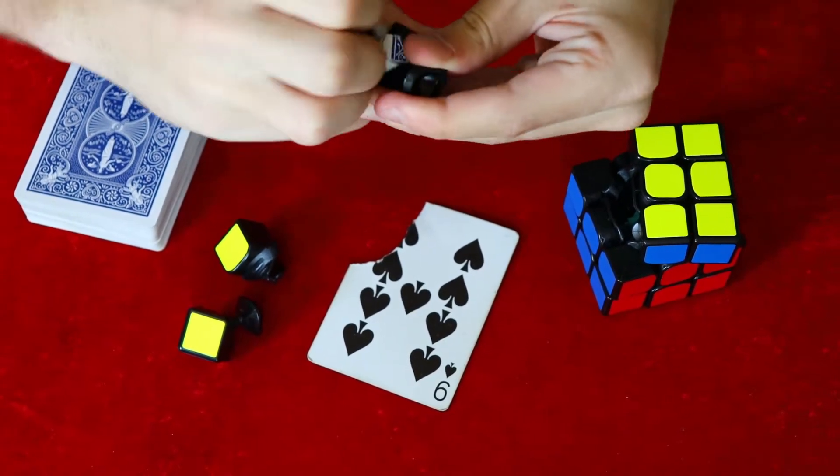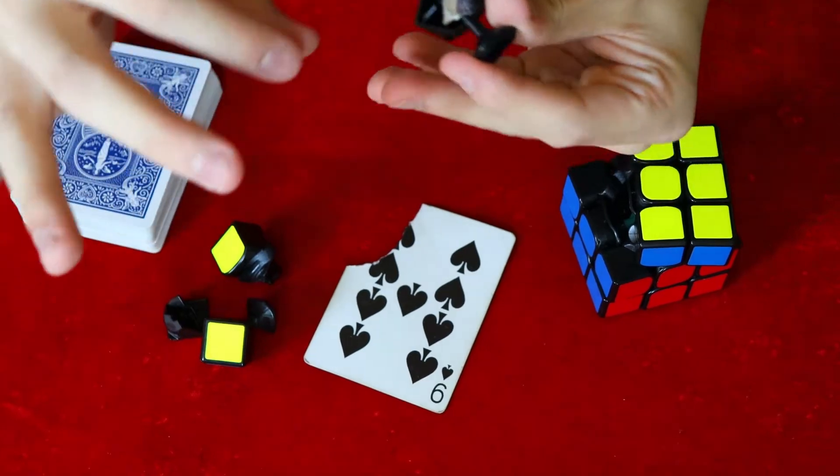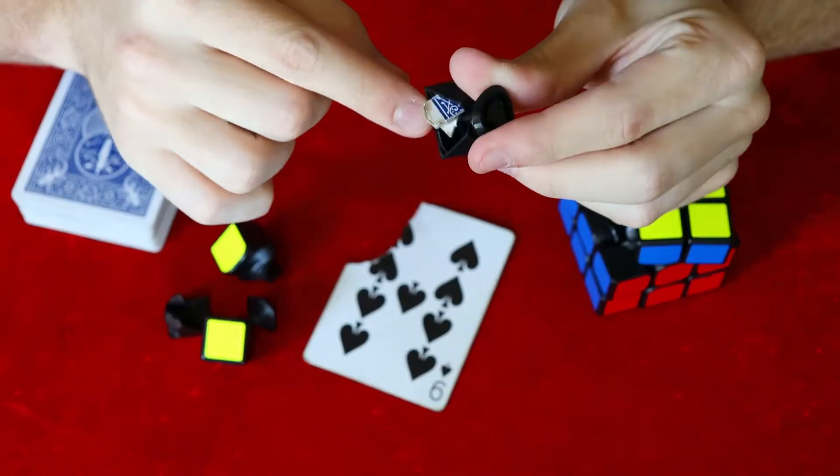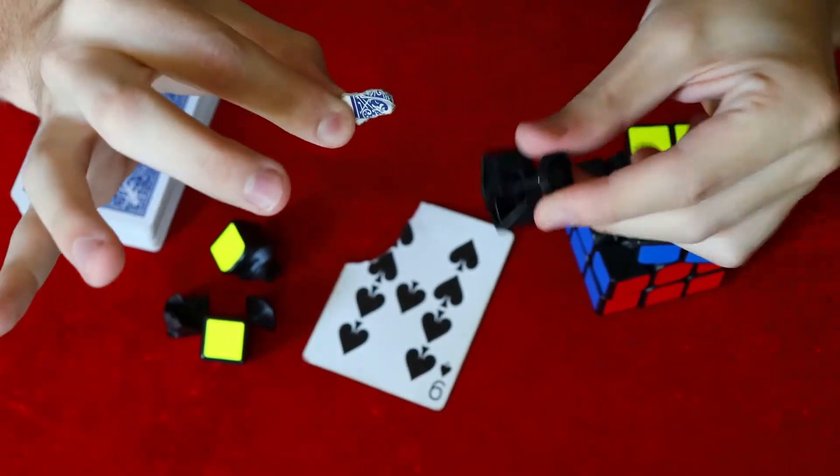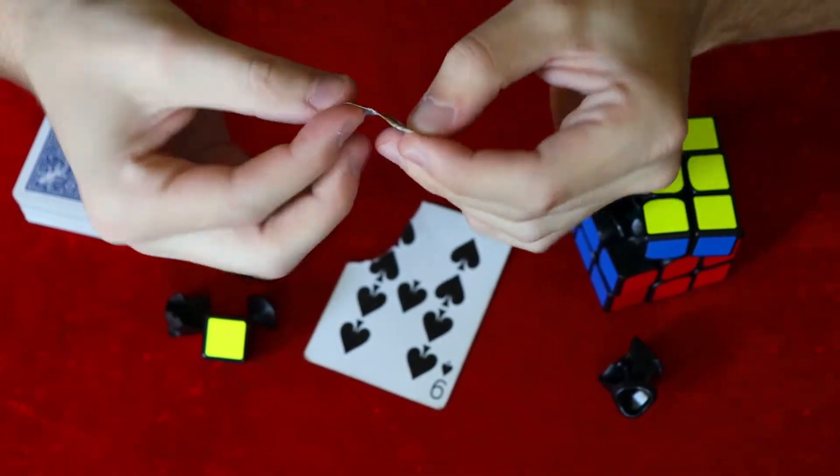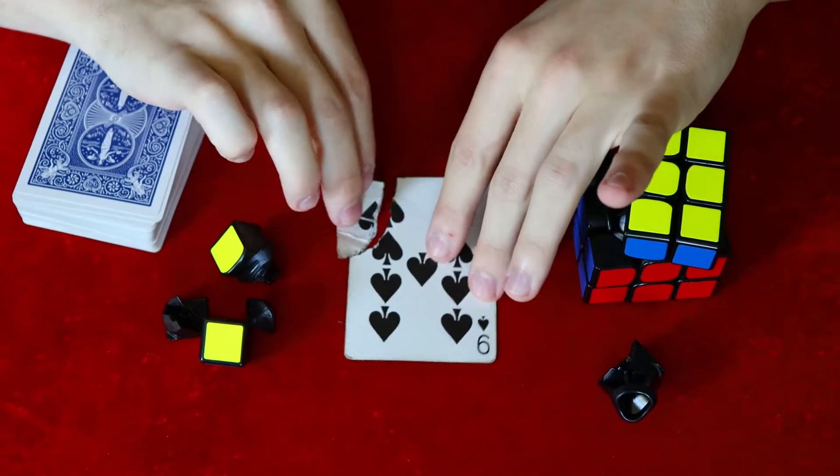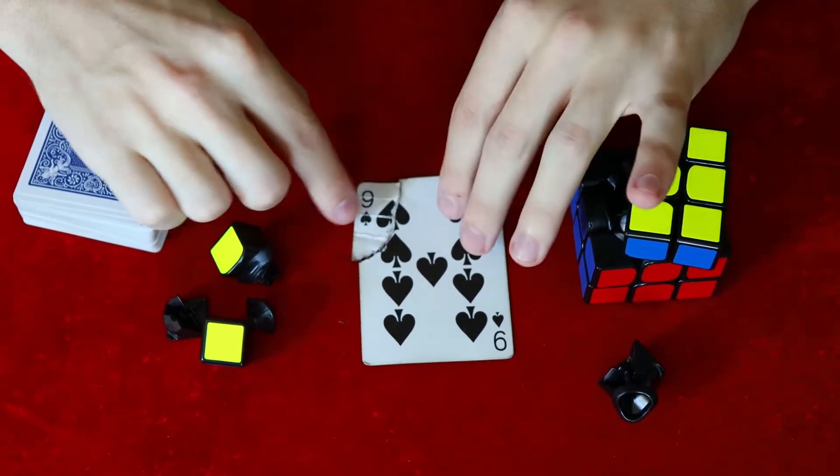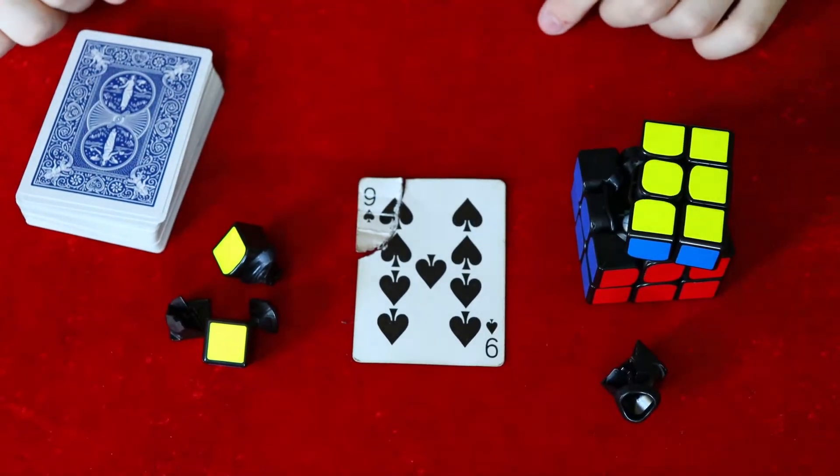Check this out. If I pull this piece off, you'll see there is a card inside of the cube piece. And check this out. If I open it up, you will see that this is indeed the nine of spades and that matches up absolutely perfectly. Just like that.